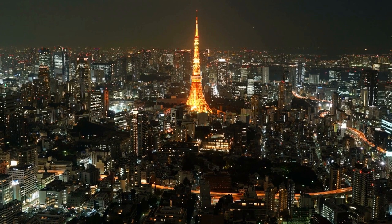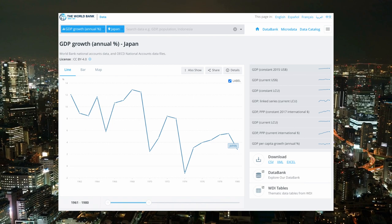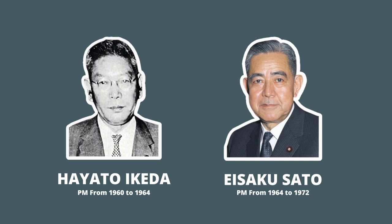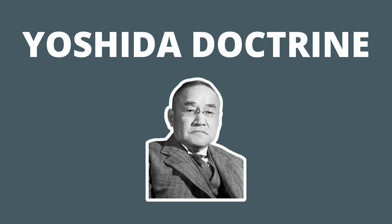This strategy allowed Japan to achieve high growth of roughly 10% GDP growth per year from the 1950s to 1970s. Technically, Prime Ministers Ikeda and Sato were the ones who oversaw economic growth, got Japan joined to the OECD, created the Asian Development Bank, and so on — but the kickstart of Japan's economic growth is credited to Yoshida, and that's the Yoshida Doctrine.